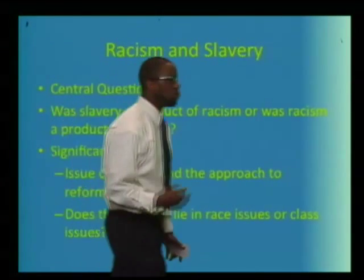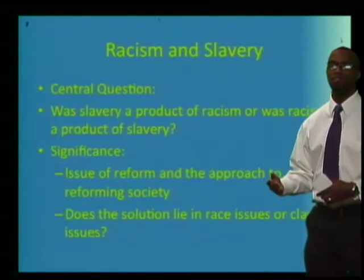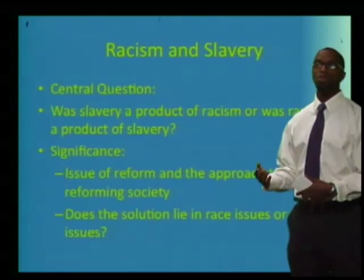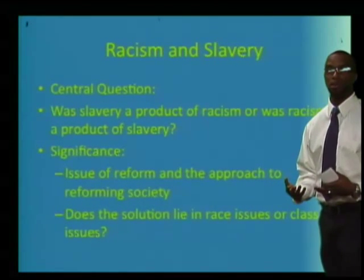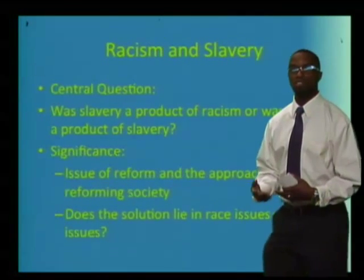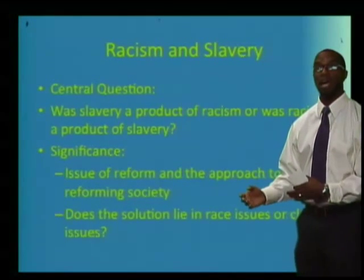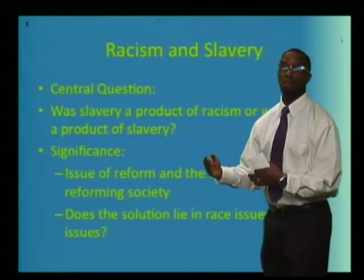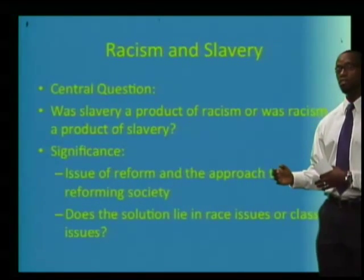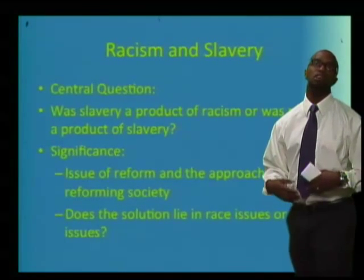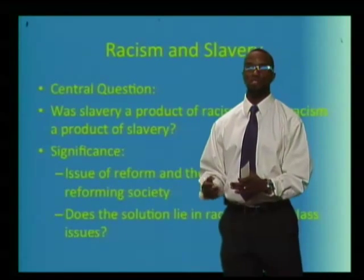If we say that slavery and racism were both bad and that the legacies of those two institutions were negative for our modern society, then this question becomes an issue of reform — an issue of making society better and the approach that we take to making society better. If slavery preceded racism, then the divisions in our society can be based in economics and class, and maybe a class-based solution will be offered. If racism preceded slavery, then maybe the issue becomes a social issue and a social-based solution will be taken.